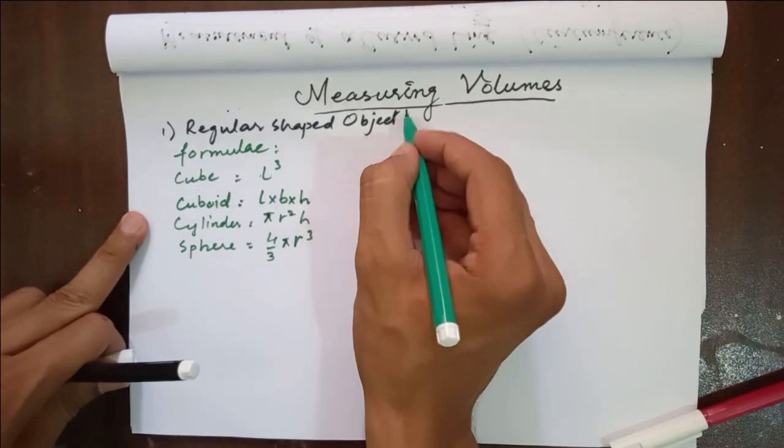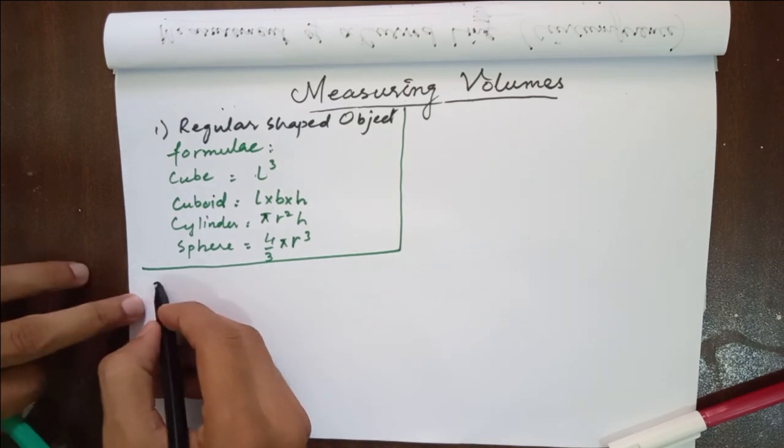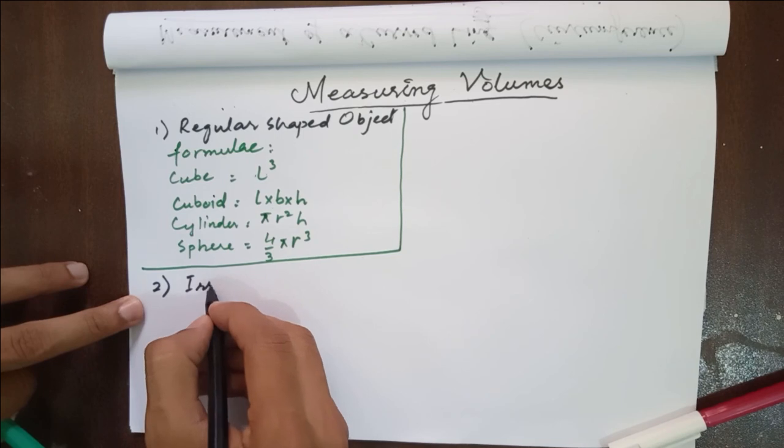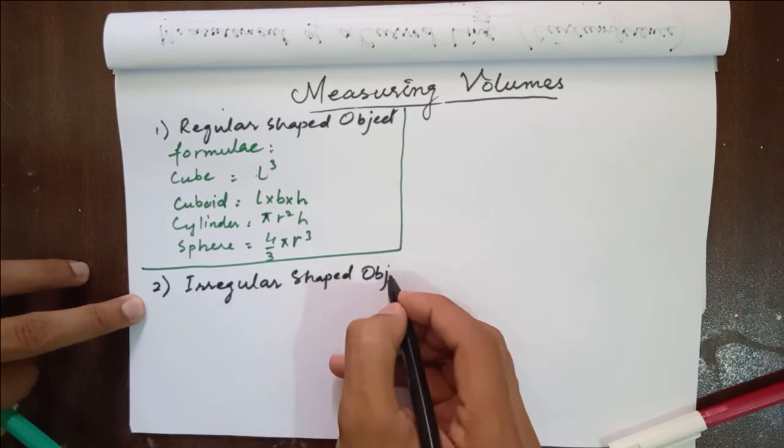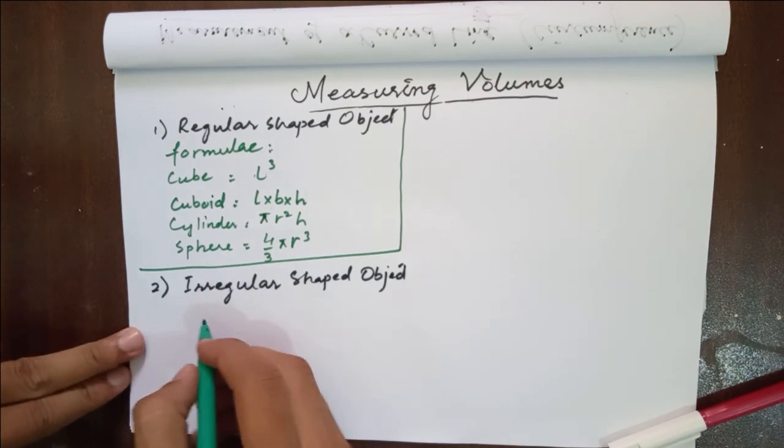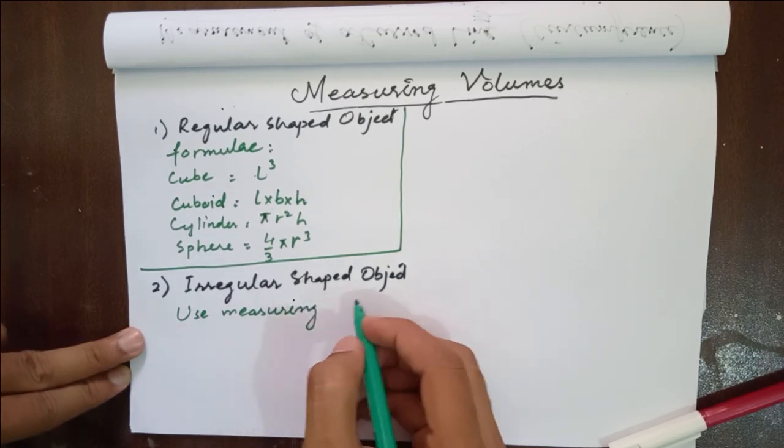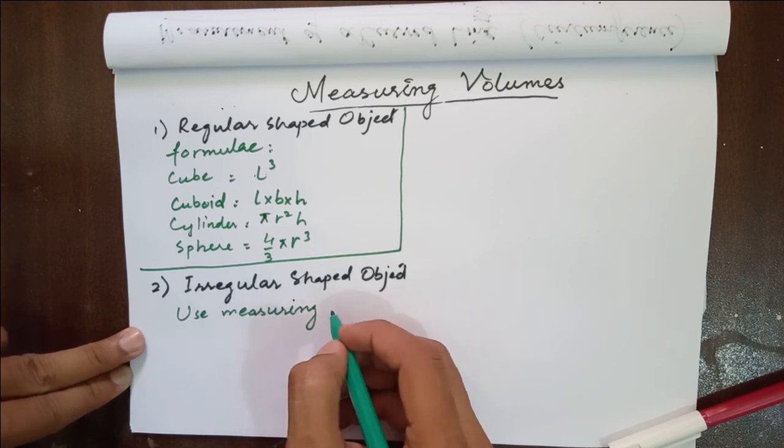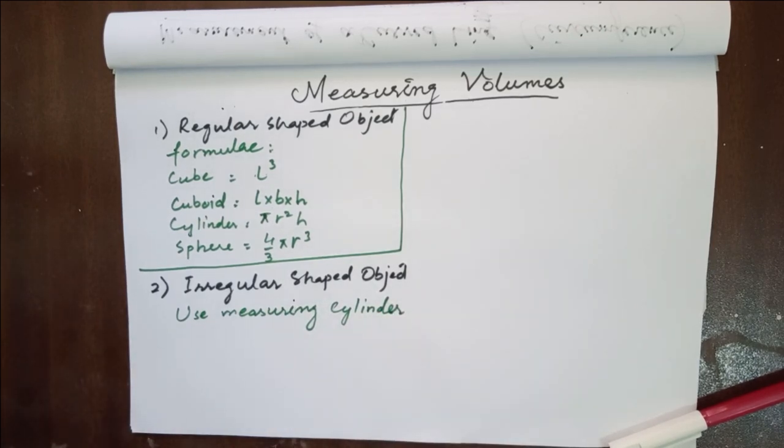Now, moving on to the next topic. We have an irregular shaped object and we have to find its volume. In this case, we use a measuring cylinder to determine the volume of an irregular shaped object. Now, I am going to discuss how we use a measuring cylinder to determine the volume of an irregular shaped object.